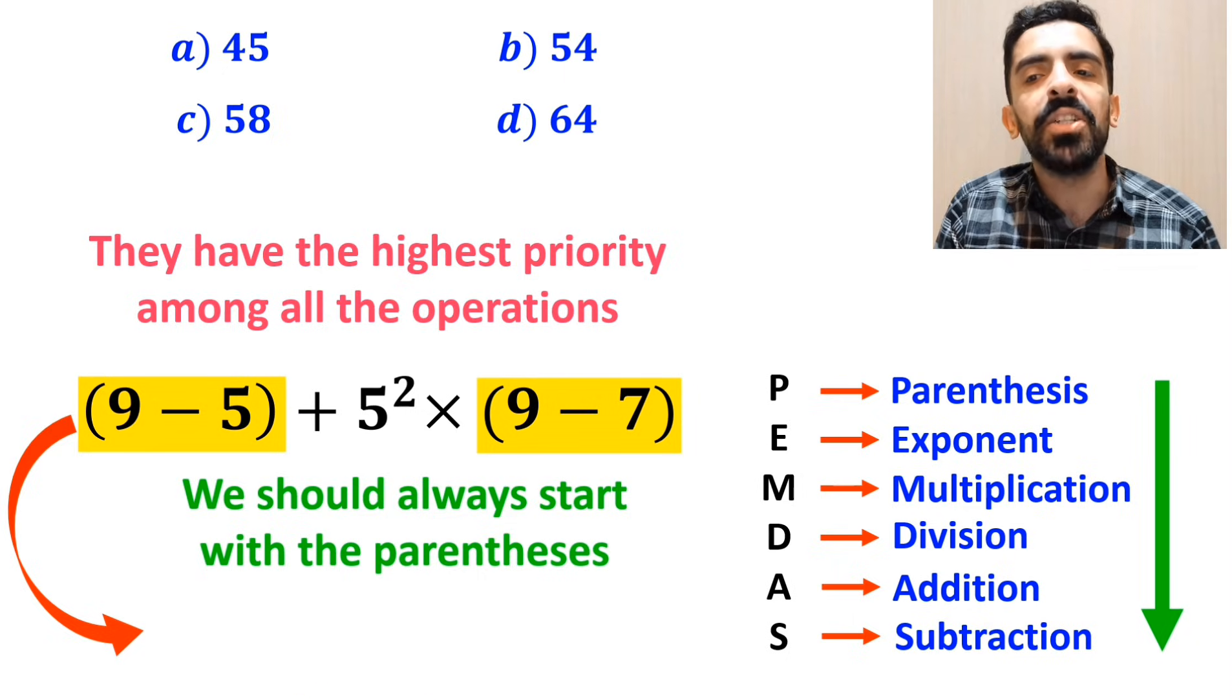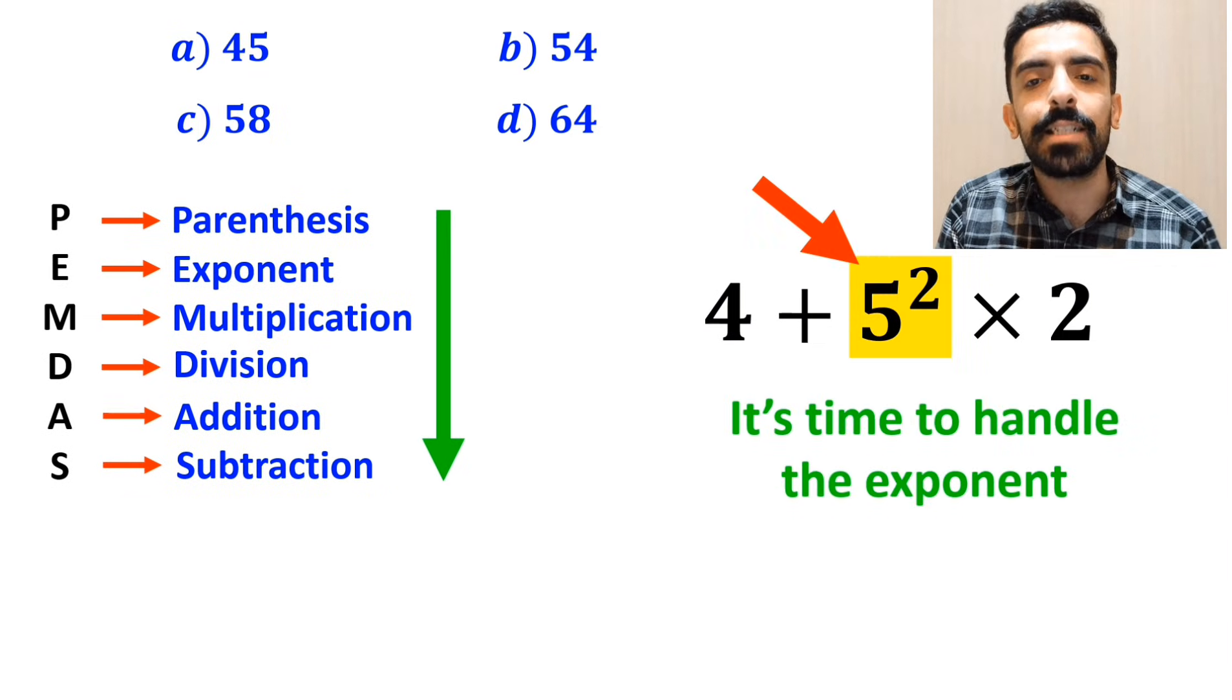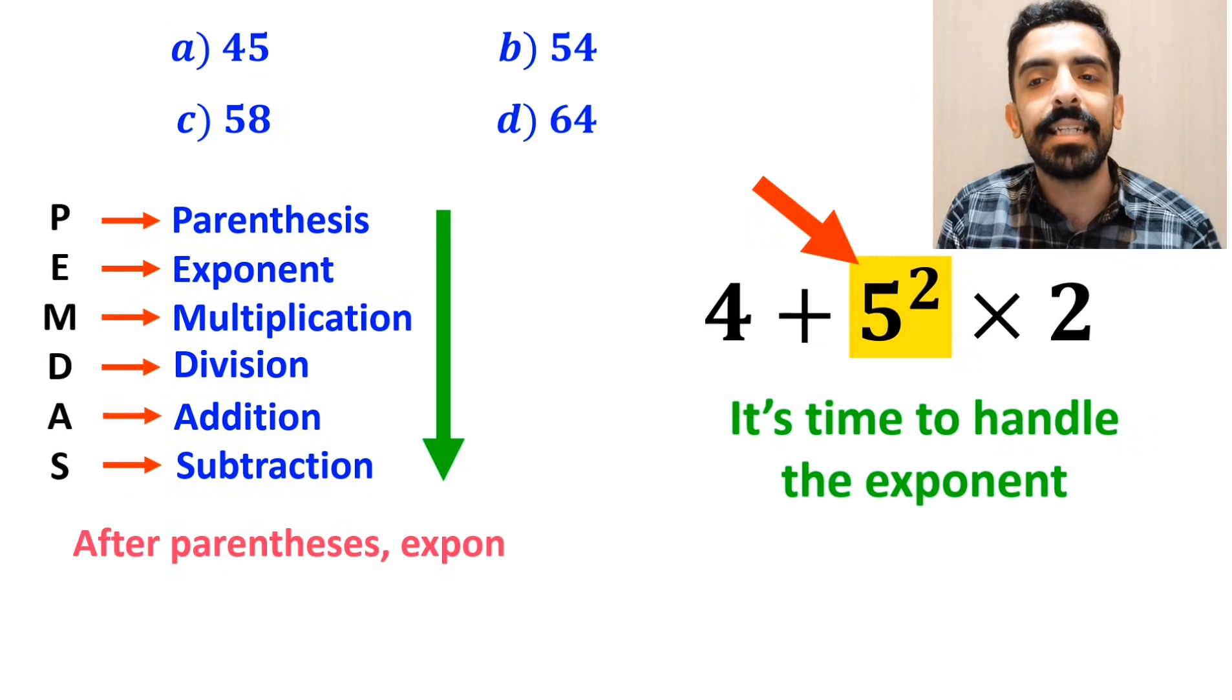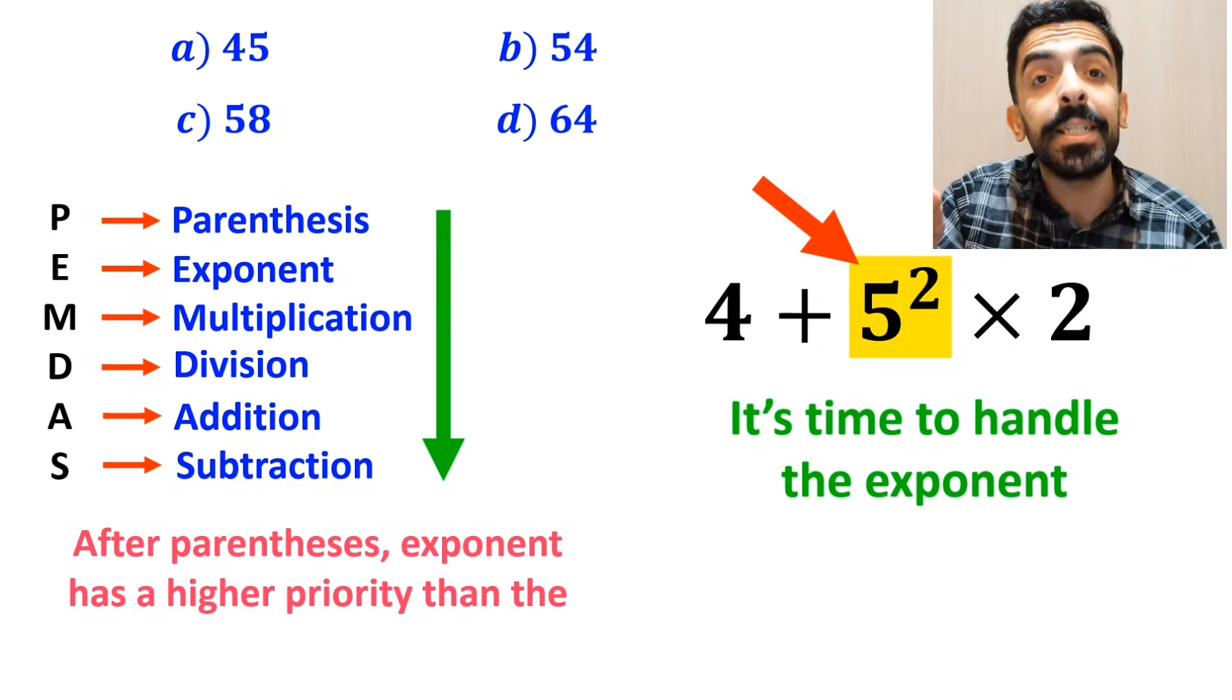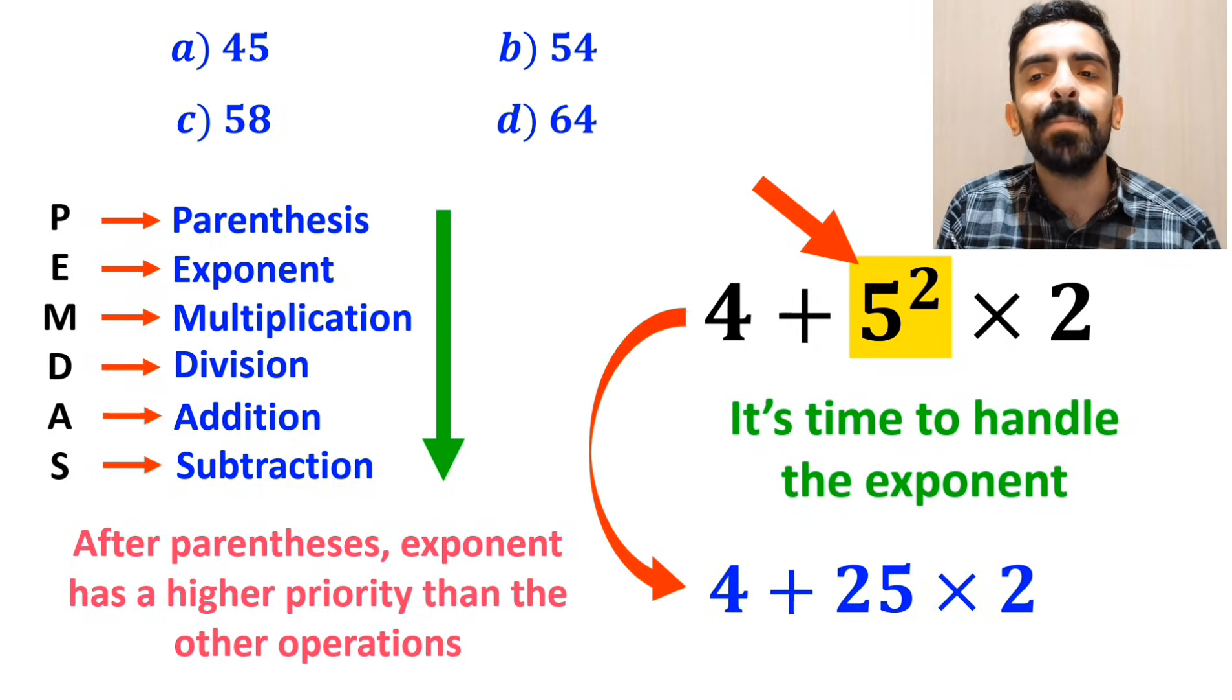So instead of the original expression, we can rewrite it as 4 + 5² × 2. In the next step, it's time to handle the exponent, because after parenthesis, exponent has a higher priority than the other operations. So we'll write this expression as 4 + 25 × 2.